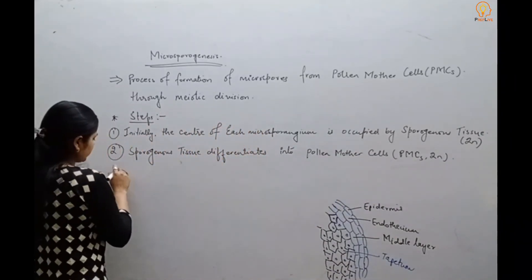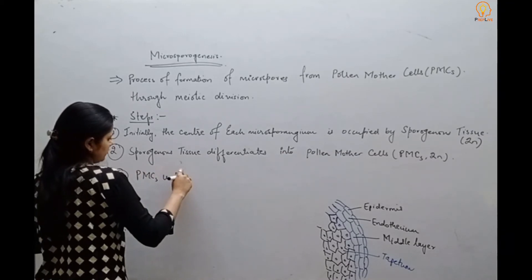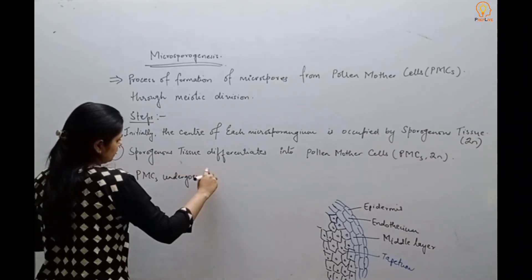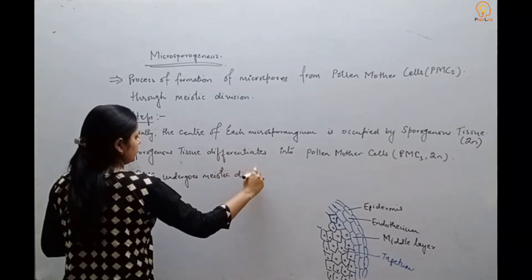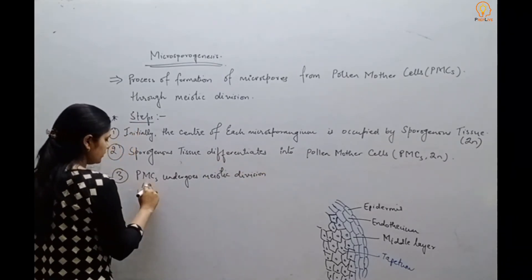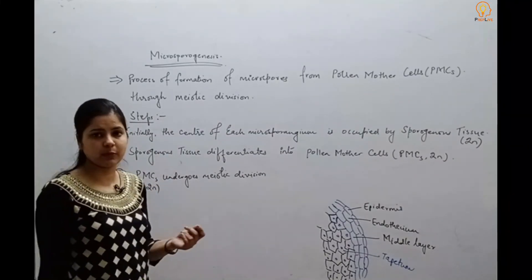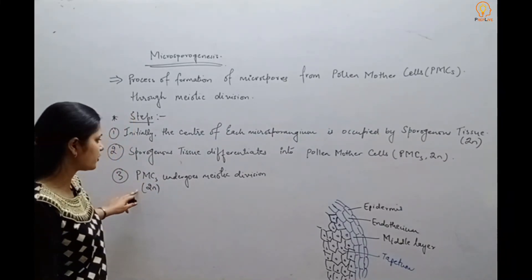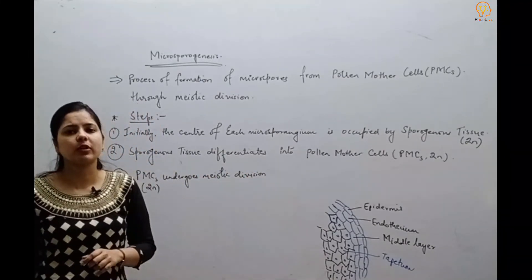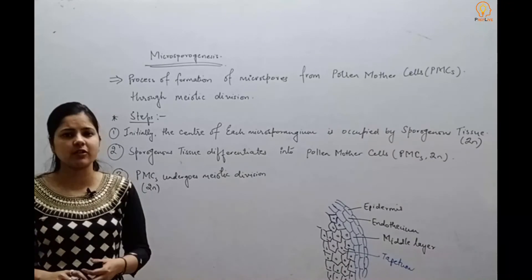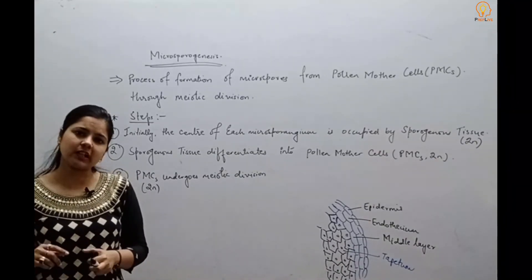To summarize the steps: sporogenous tissue differentiates and matures to form pollen mother cells, which are of diploid nature. These pollen mother cells undergo meiotic division (reduction division), forming a microspore tetrad. Each microspore in the tetrad is of haploid nature.